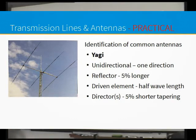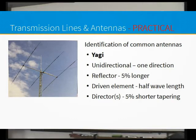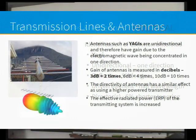The Yagi antenna - named after Yagi and Uda, the two Japanese scientists who developed it - is a multi-element antenna. It has a reflector (about 5% longer than the driven element), a driven element where the coax is connected (usually a dipole), and then directors at the front. This is a unidirectional antenna - it only transmits and receives in one direction, toward where the directors are pointing. The RF energy from the driven element goes to the reflector, is reflected forward, and the directors direct it forward.